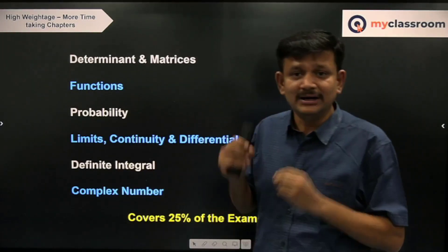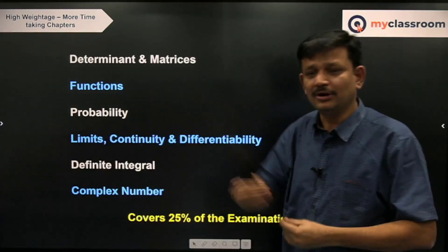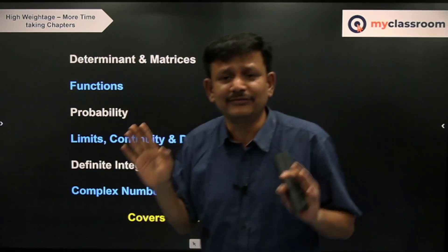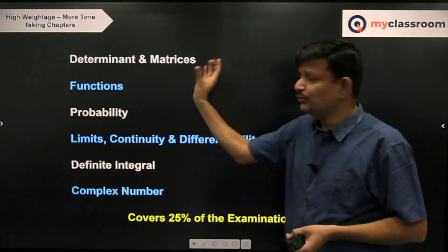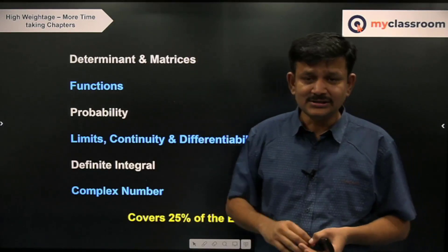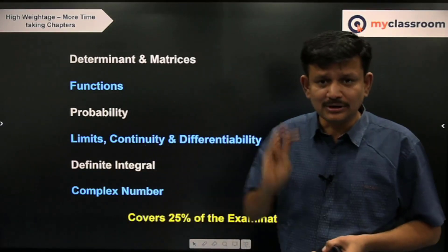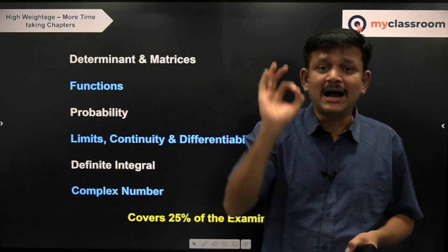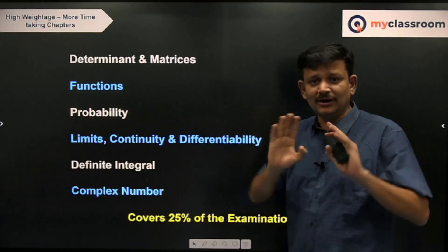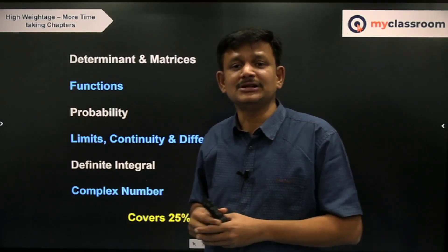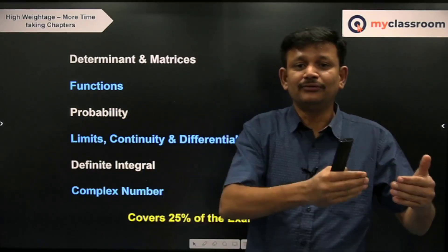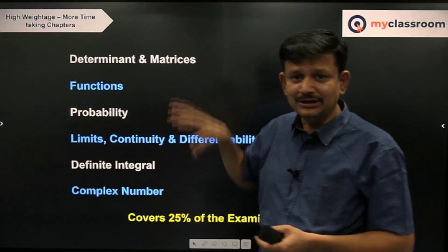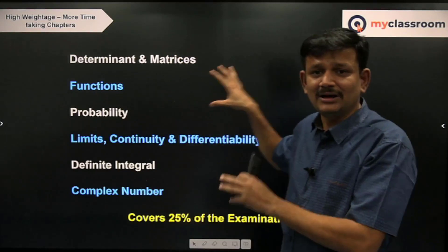High-weightage chapters that take more time include Determinants and Matrices. To get more marks, you have to invest time here. In Matrices, focus initially on solving systems of equations — a very simple concept and 70 to 80% of questions revolve around it. Then comes adjoint properties and inverse: there are 5 to 6 properties on adjoint, how to find the adjoint of adjoint of A, and A into adjoint of A equals I times |A|ⁿ. Focus on adjoint, inverse, and system of equations to cover the majority of Matrices.